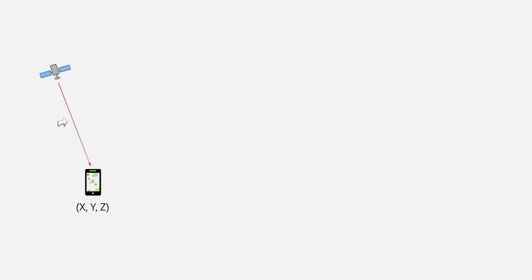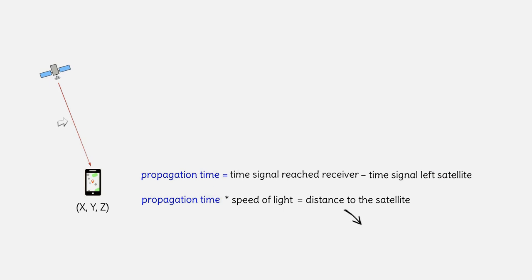We will see in the next video that the signal does not travel in a straight path. To obtain the range we need to know the signal's travel time or propagation time. The propagation time equals the time the signal reached the receiver minus the time the signal left the satellite. The propagation time multiplied by the speed of light equals the distance to the satellite, the range, or more accurately the pseudo-range since the measurement contains errors.